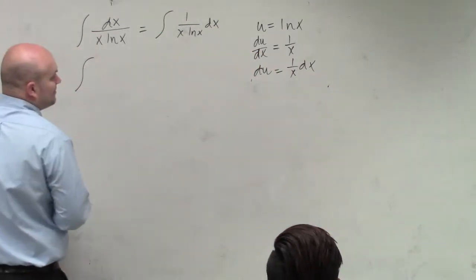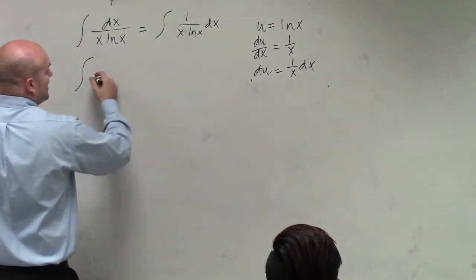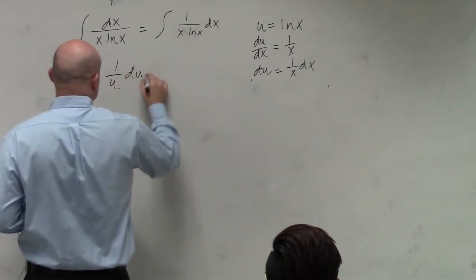So therefore, I basically go ahead and substitute 1 over x dx. So I basically have 1 over u du,